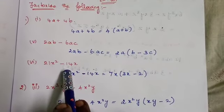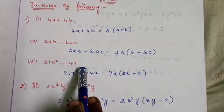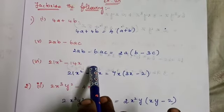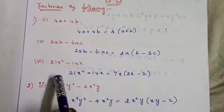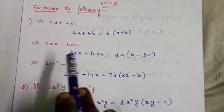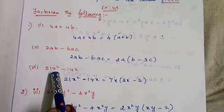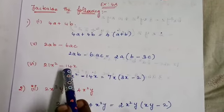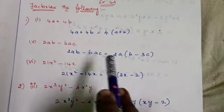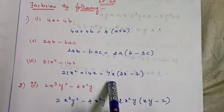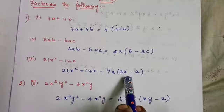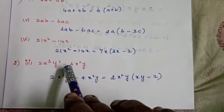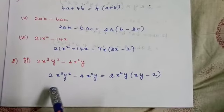Next: 21x² - 14x. The coefficients 21 and 14 are both in the 7 times table, so take out 7. For the variables, x² and x — the smaller power is x, so take out x. The common factor is 7x. Remaining: 21 divided by 7 is 3 and one x remains, giving 3x; 14 divided by 7 is 2 and x is already taken out, giving 2. So the answer is 7x(3x - 2).